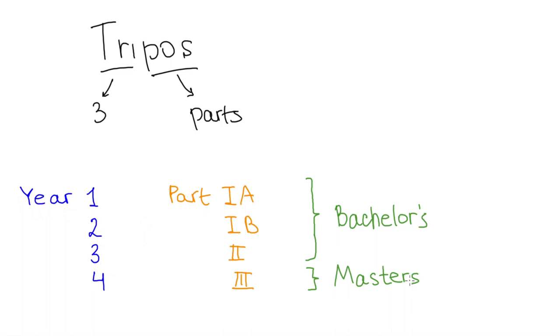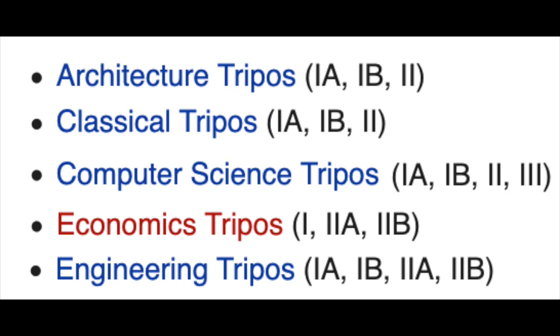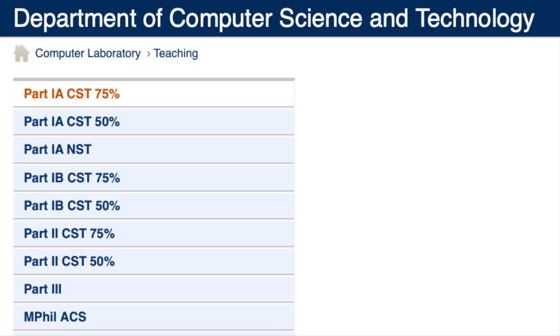So for computer scientists the four years end up being part 1a, 1b, 2, and 3, whereas for engineers it's 1a, 1b, 2a, 2b. Economists have it as part 1, 2a, and 2b and so on. Which is why it's not always clear which year you mean if you use parts, but this is how it's described on our course webpage so I wanted to mention it for you all to understand.